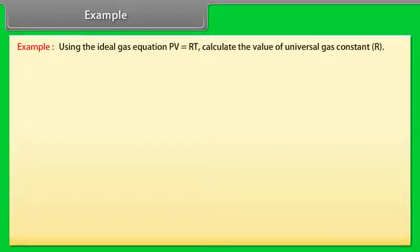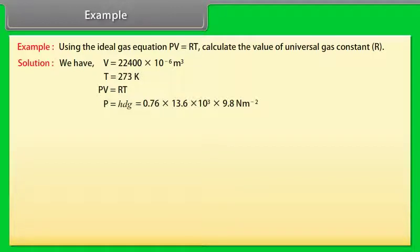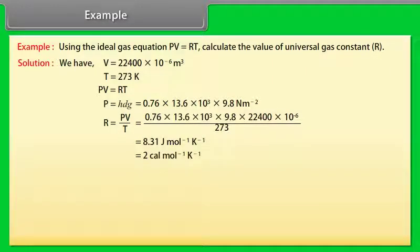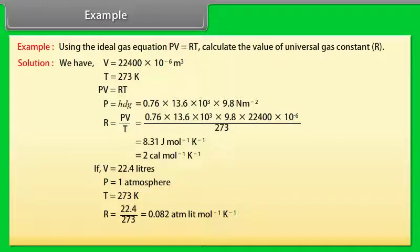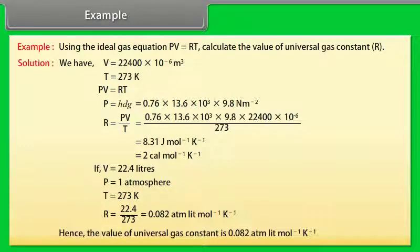Example: Let's take an example of kinetic theory of an ideal gas. Using the ideal gas equation PV equals RT, calculate the value of universal gas constant. Let's see the solution. We have V equals 22400 into 10 to the power minus 6 meter cube, T equals 273 Kelvin, PV equals RT, P equals HDG. Now we calculate value of R by putting the values. R equals PV by T equals 2 calorie per mole per Kelvin. If V equals 22.4 liters, P equals 1 atmosphere, T equals 273 Kelvin, R equals 0.082 atm liter per mole per Kelvin. Hence the value of universal gas constant is 0.082 atm liter per mole per Kelvin.